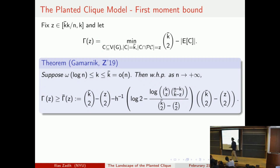How much of this is rigorous? Currently, we can prove OGP for k up to n^α where α is a small constant around 0.1 — well below √n. We do not yet prove the full phase transition. There is a lot of work for relatively limited rigorous conclusions at the moment, but the conjecture has strong first-moment evidence. I believe the limitation is technical rather than fundamental.